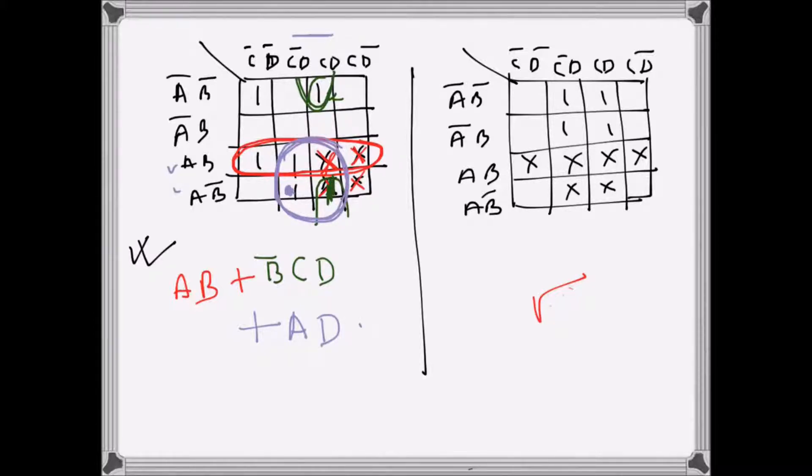Now the only thing that is left is, what color can I use, maybe blue. So this one, I see that this one is left, and unfortunately this one cannot be grouped with anything else, so this one has to go by itself. So this one will be, this point is A bar B bar C bar D.